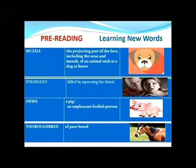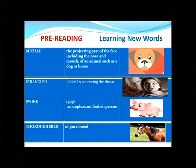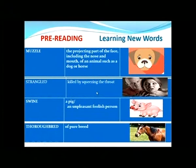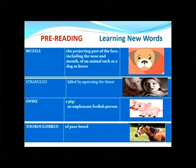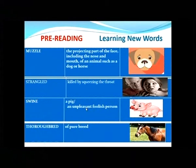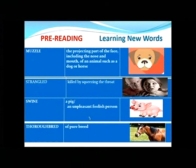'Muzzle': the projecting part of the face including the nose and mouth of an animal such as a dog or a horse. We pronounce it as muzzle. 'Strangled': killed by squeezing the throat. 'Swine': a pig, but it is also an unpleasant, foolish person — this is the meaning in the story.